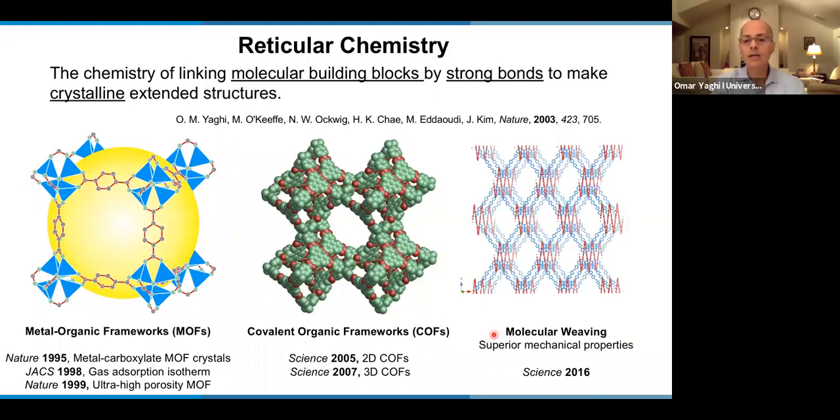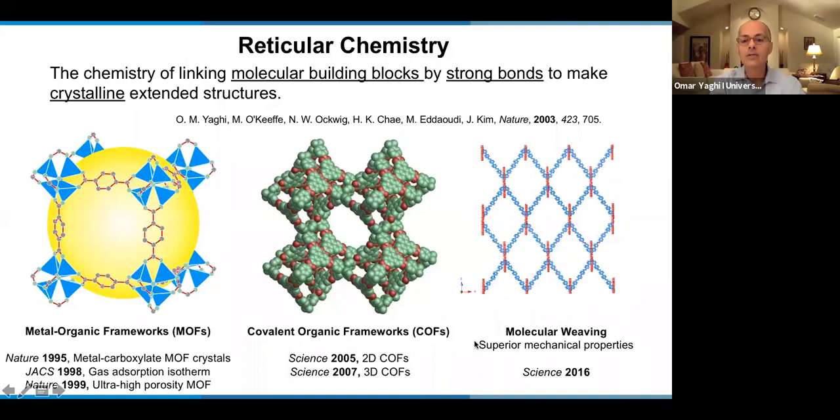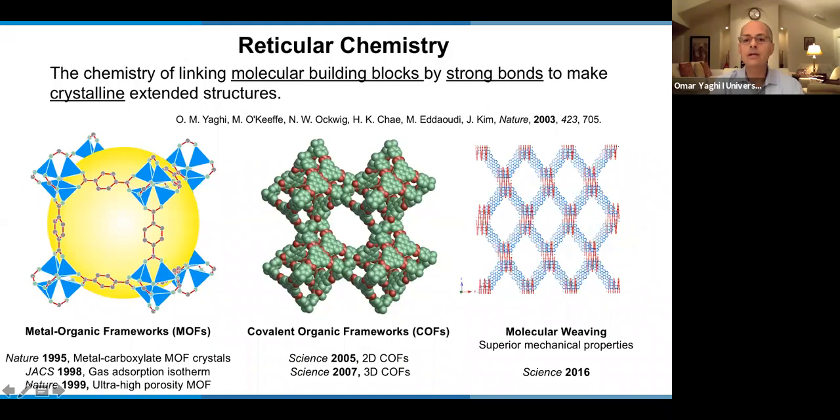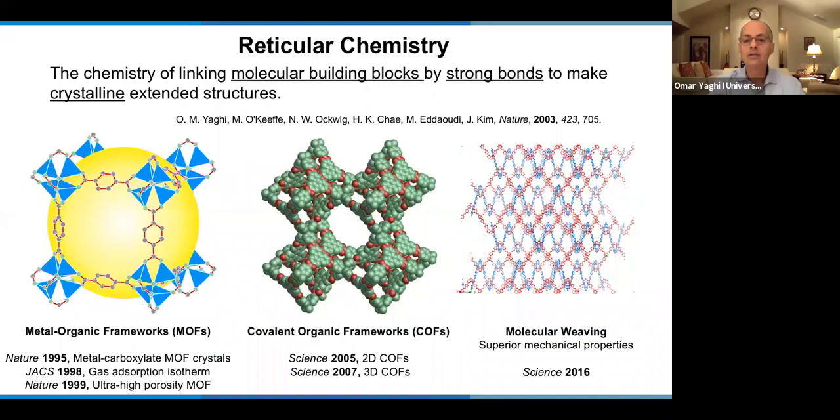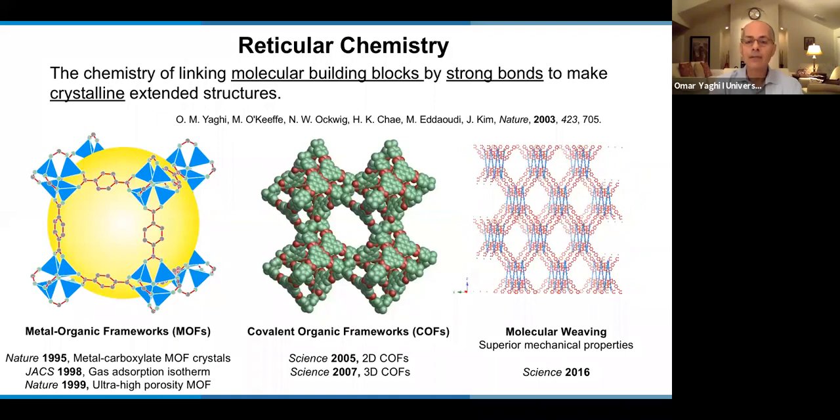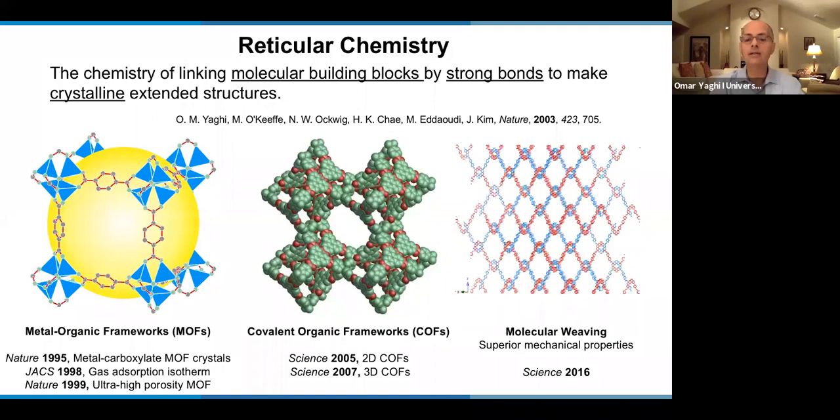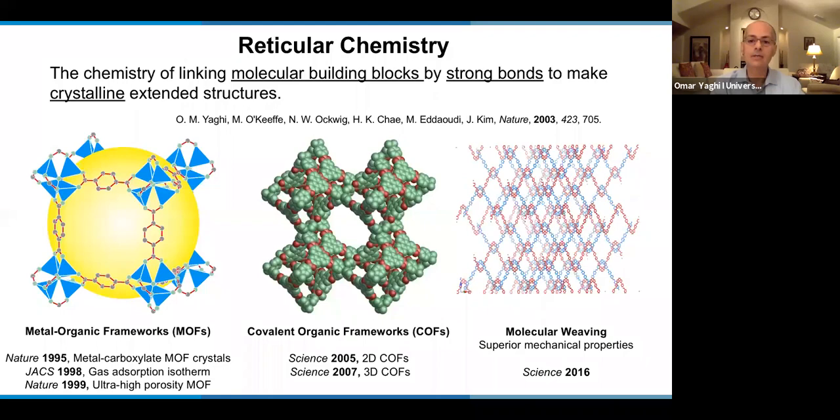And then from there on, we wanted to continue this idea of reticular chemistry by showing that you don't need metals to link organics together, but now you can link them by organics through covalent bonds. And the first 2D COFs we reported in 2005, and the first 3D COFs we reported in 2007. And now we recently introduced molecular weaving. This is molecular weaving, and it's basically the covalently linked threads. These are organic threads based on COF chemistry.